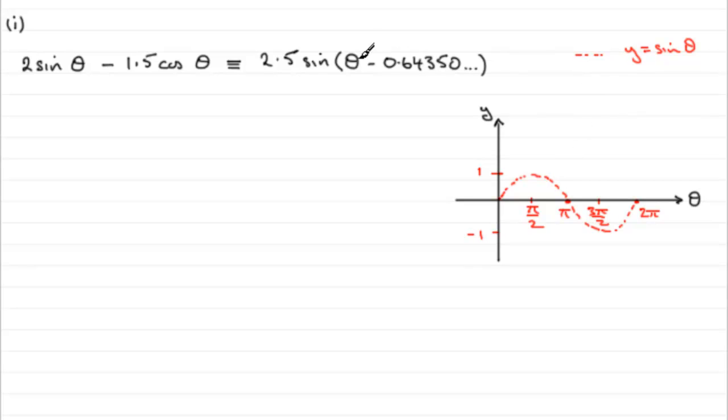Now, if we look at sine of theta minus 0.64350 odd radians, then what that does to this graph, if we replace the theta with theta minus 0.64 odd radians, it translates this graph by 0.64 radians to the right. So you're going to get a new graph looking something like this.